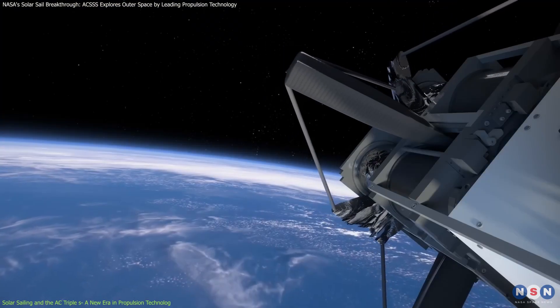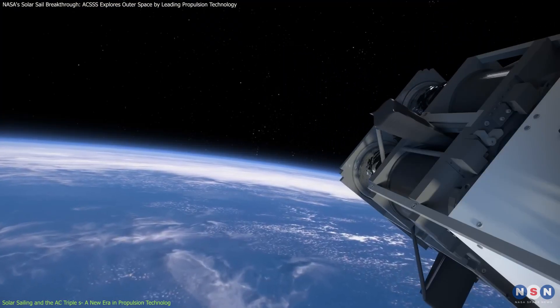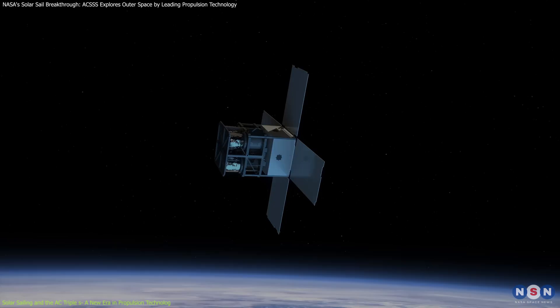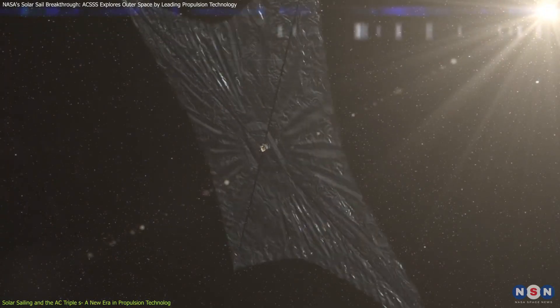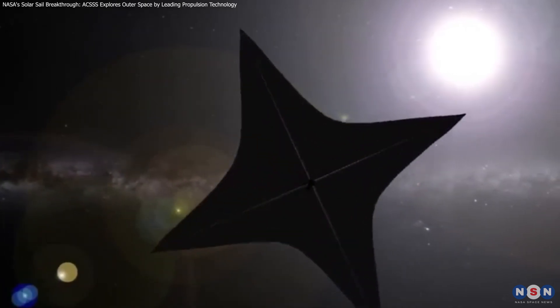This allows the sail to be compactly stowed inside a small spacecraft, such as a CubeSat, and then deployed to its full size once in space. This innovation is crucial because it means large sails can be packed into smaller volumes, making them more practical for a range of missions.